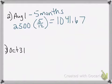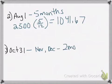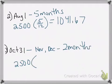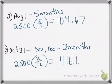One last example: October 31st. October has already passed, so we are only looking at a full month of November and a full month of December — that is two months. We take the annual depreciation, multiply by 2, divide by 12, and we get $416.67 as the depreciation amount for that partial year.